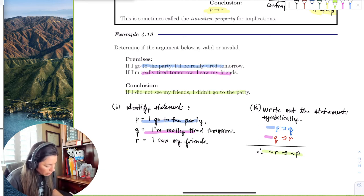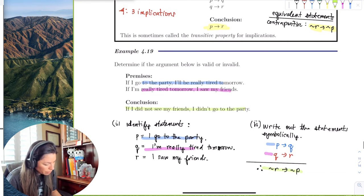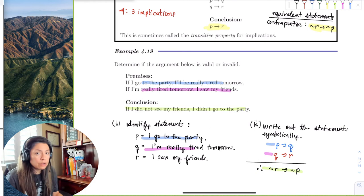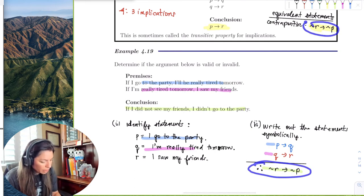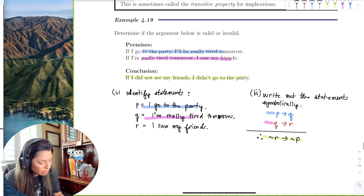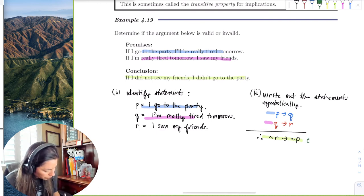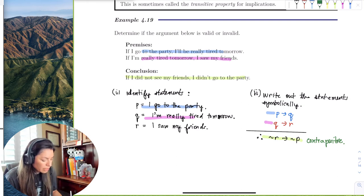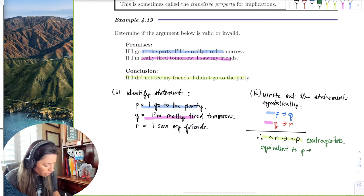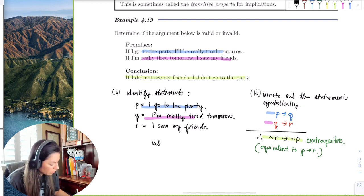So in this case, I have some sort of not. And notice up here that I should have gotten if P, then R, or I should have gotten if not R, then not P. And notice here I got if not R, then not P. So I didn't get the implication, but I did get the contrapositive. So remember that this is equivalent to if P, then R. So this means that this is a valid argument.